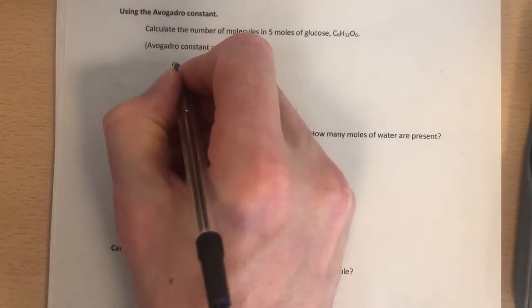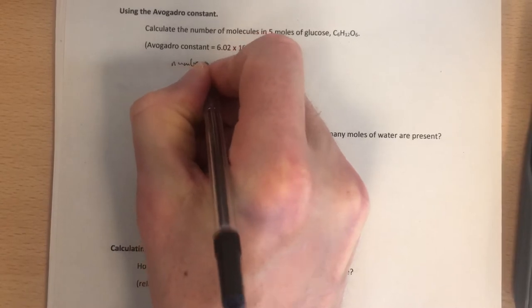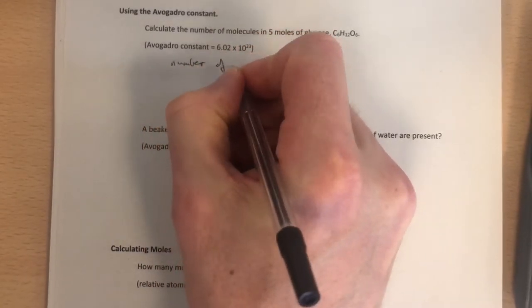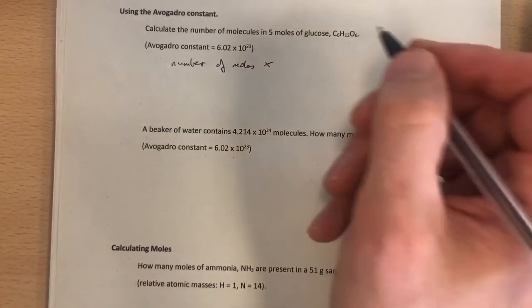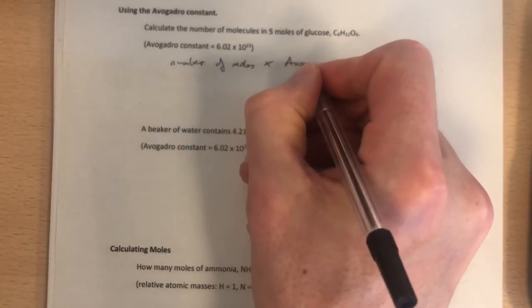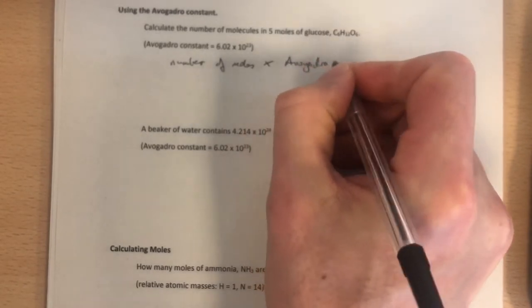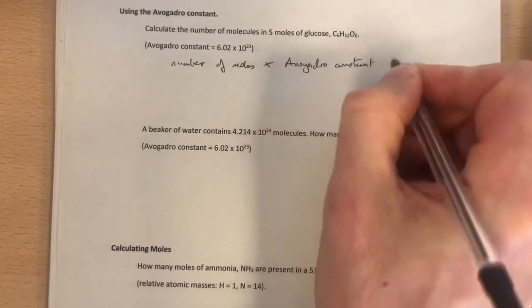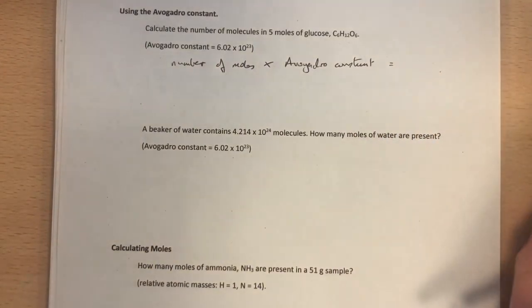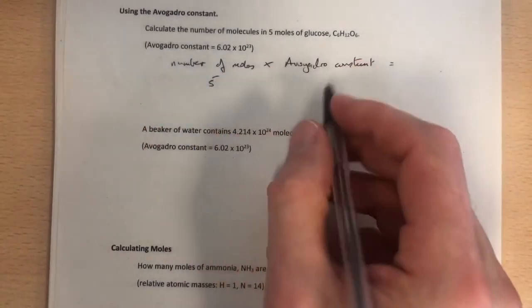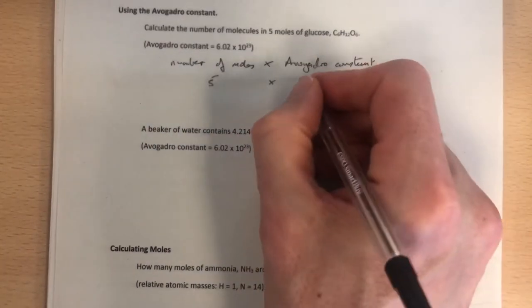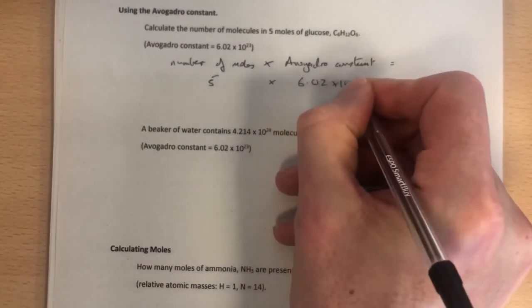We're going to do the number of moles, the number of dozen if you like, multiplied by the constant, 12 in the case of a dozen. But in this case, the Avogadro constant. And that's going to give us an extremely large number. But it is exactly the same as saying if you've got two dozen eggs, you have 2 times 12, 24. We're going to do 5 here because we've got 5 moles, and we're going to multiply it by this Avogadro constant, 6.02 times 10 to the 23.